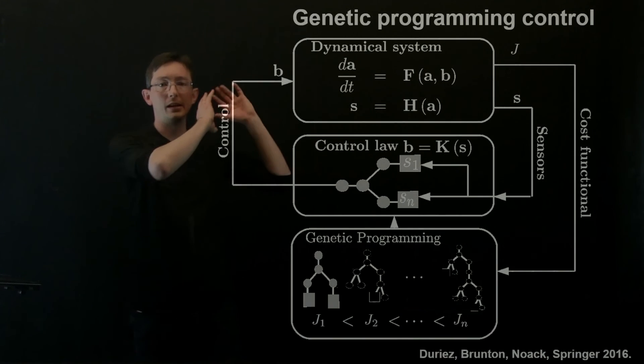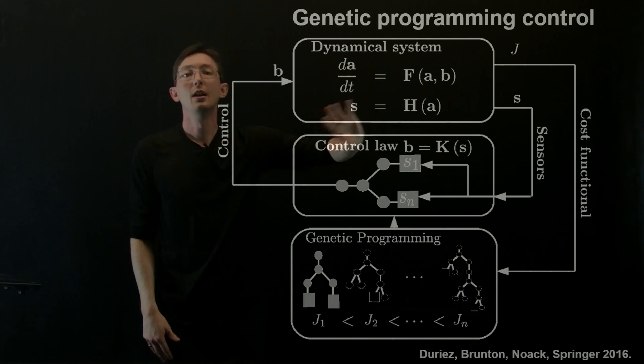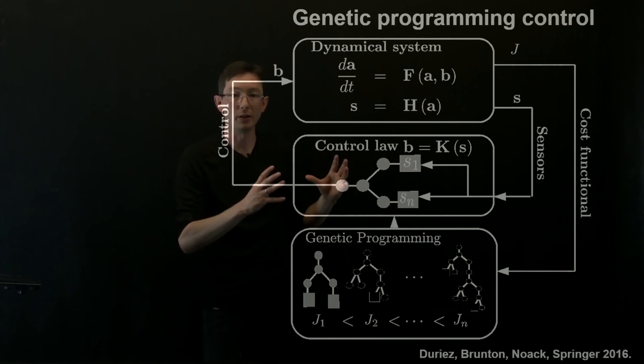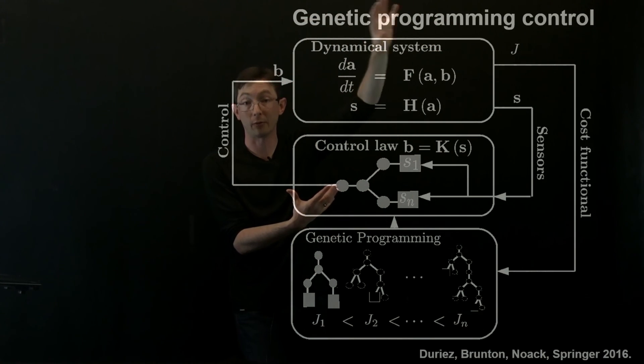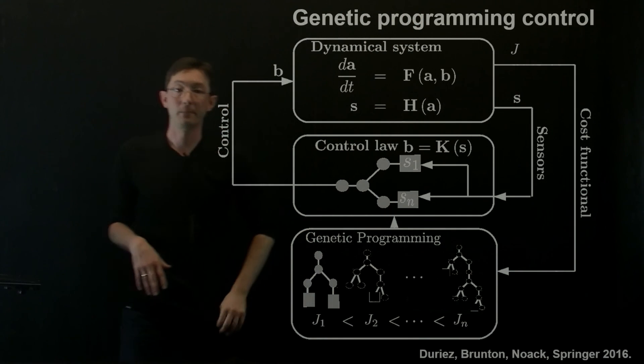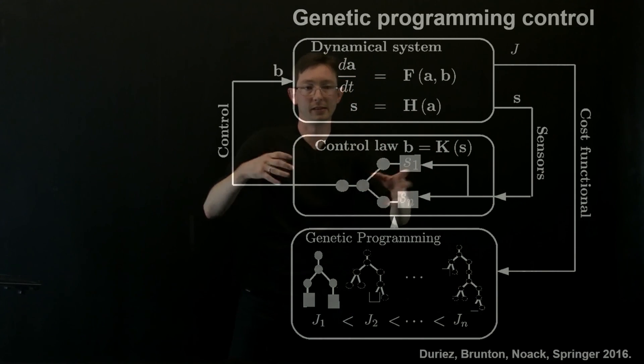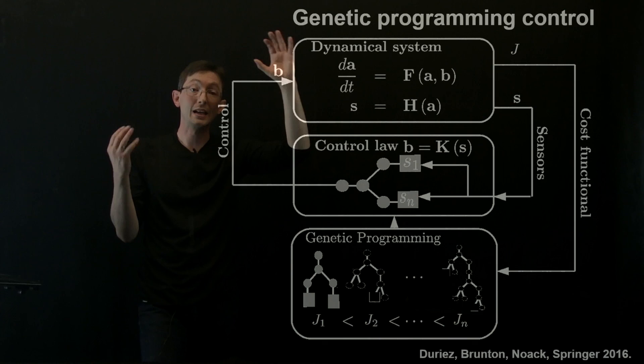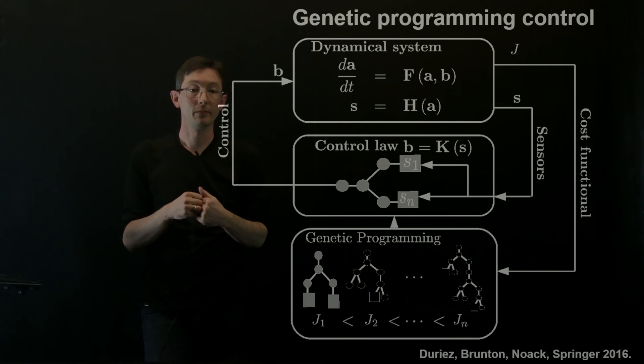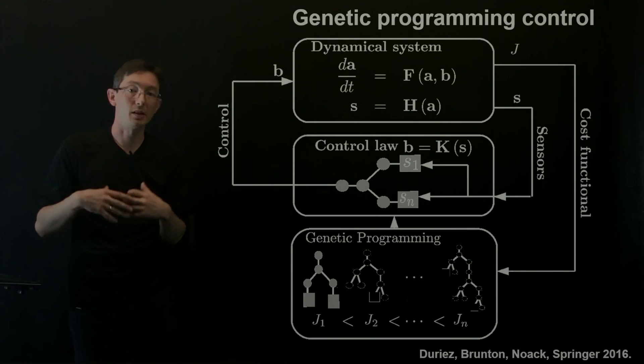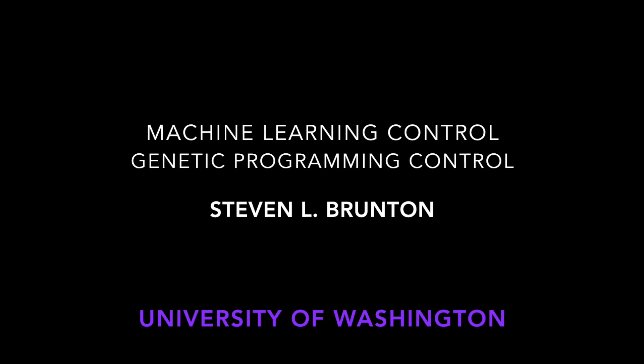Okay, so the big picture here is you have some complicated high-dimensional nonlinear system that you want to control. You don't want to put a lot of effort into modeling it. So instead, what you do is this kind of exploratory control optimization using this very powerful genetic programming control framework. And there's other optimizations you can run to optimize this cost functional. But genetic programming is particularly flexible and powerful for identifying new structures of controllers that you haven't seen before. Okay, so next time we'll see how this works on some fluids experiments. And we'll talk a little bit more about the practicalities. Thank you.